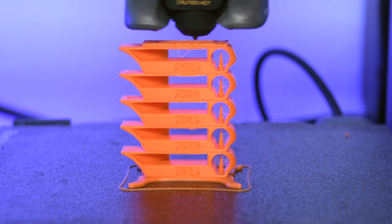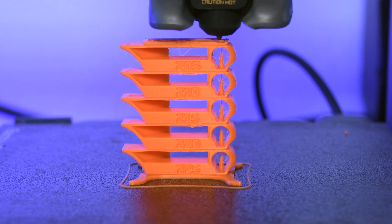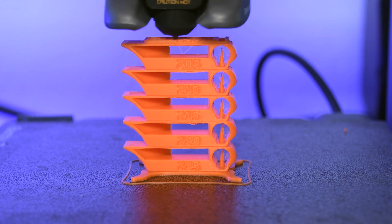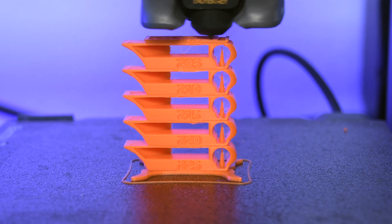The printing temperature also needs to be set correctly so that the seam can be printed as finely as possible. A temperature tower is best suited for this. The individual levels of the tower are printed at different temperatures. After printing you can see which temperature is best for the filament.